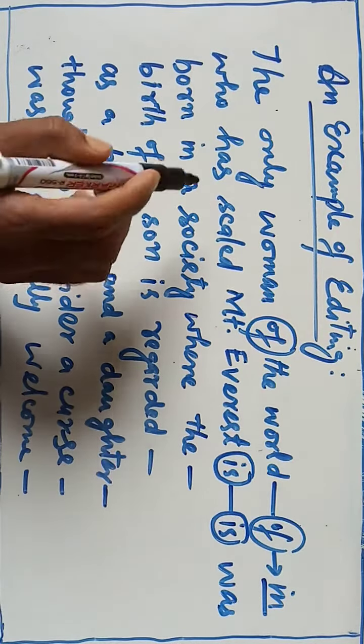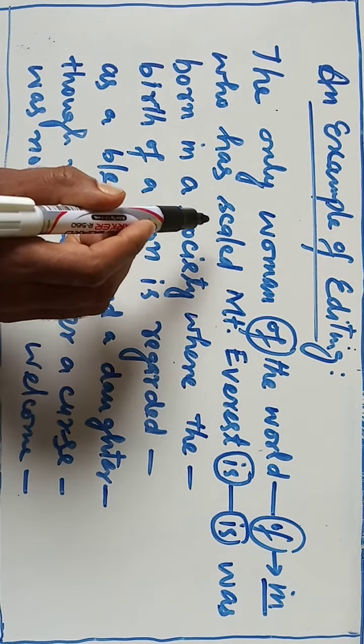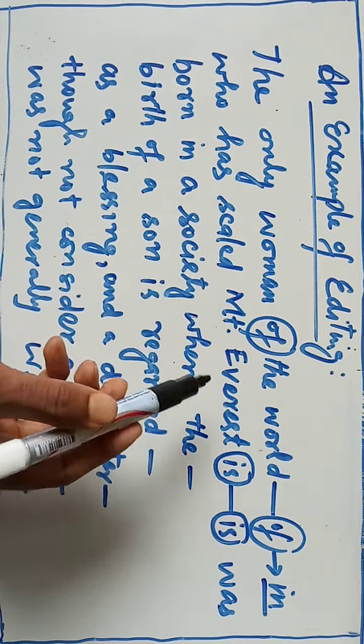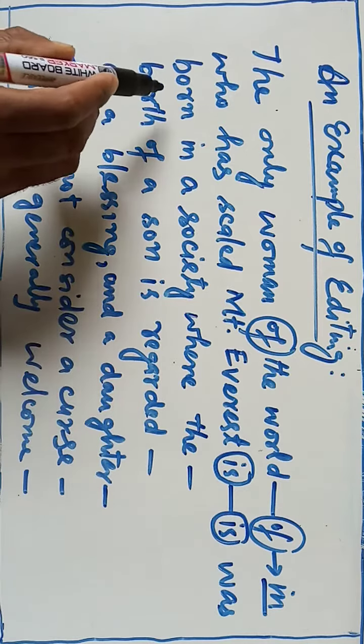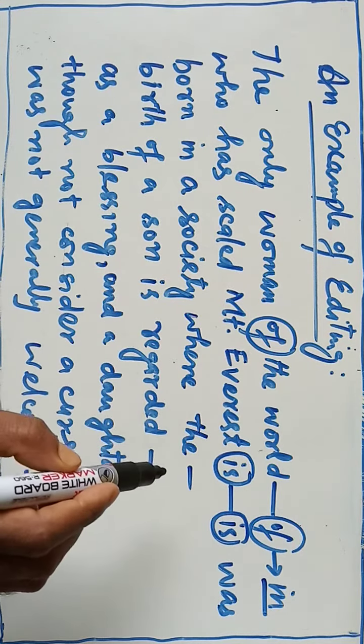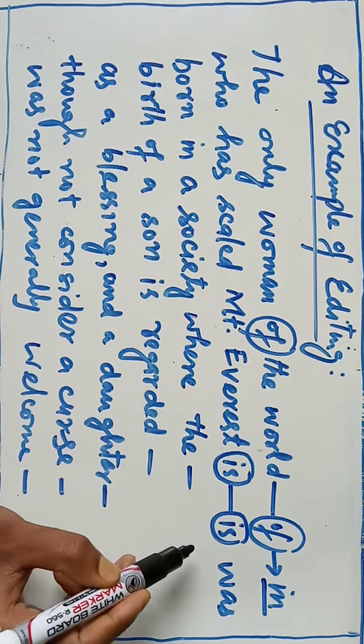Who has scaled - past ki baat hai, who has scaled. 'Is' nahi ki 'was' - was wo thi. Okay, so 'is' will change to 'was'. Born in a society where - this is mein koi mistake nahi hai.